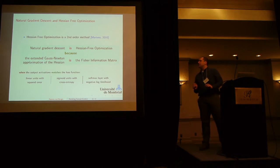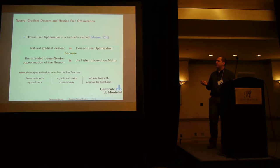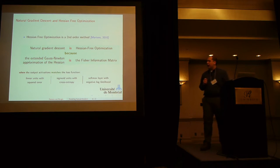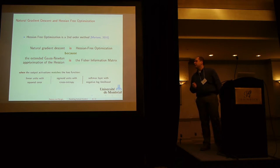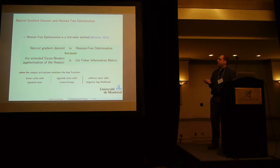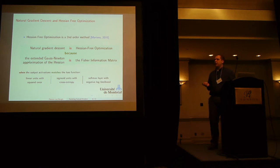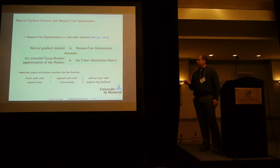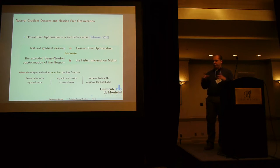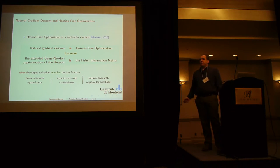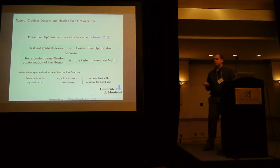Next we look at some second-order methods, starting with Hessian-Free optimization introduced by James Martens, and show how these relate to natural gradient. Hessian-Free optimization uses the extended Gauss-Newton approximation of the Hessian, and it turns out this approximation is actually just the Fisher information matrix. Looking back at the natural gradient formula, you can interpret Hessian-Free optimization as simply being a form of natural gradient, because it uses the Fisher information matrix instead of the Hessian.